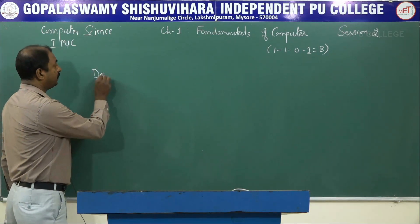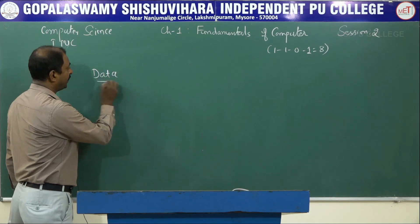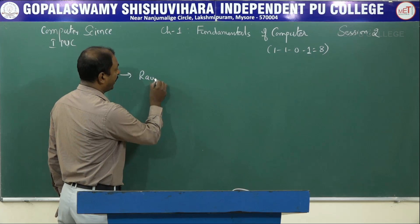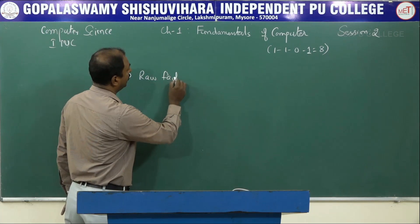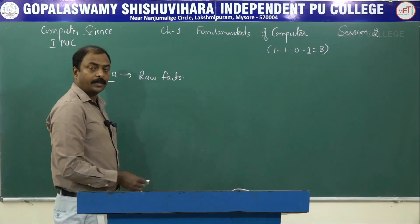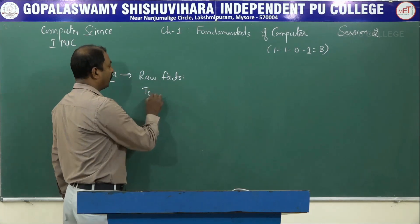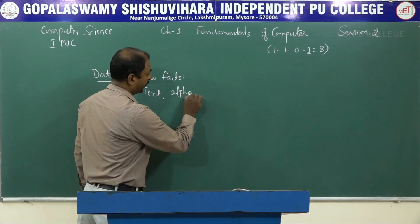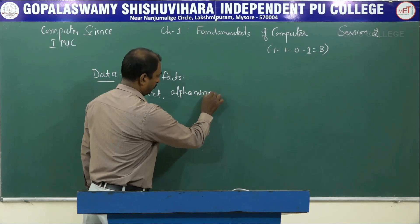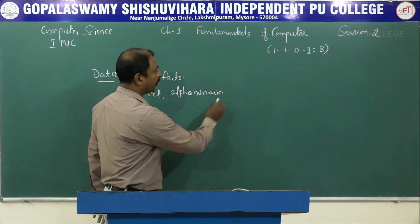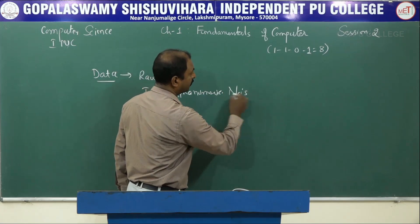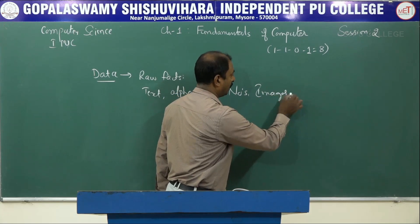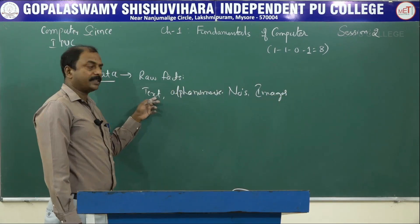In my previous session, I had told you about what is data. Data is nothing but a raw fact. Data can be in any form — maybe in the form of text, in the form of alphanumeric characters, or in the form of numbers or digits, or in the form of images or pictures. The name of a student is a data.